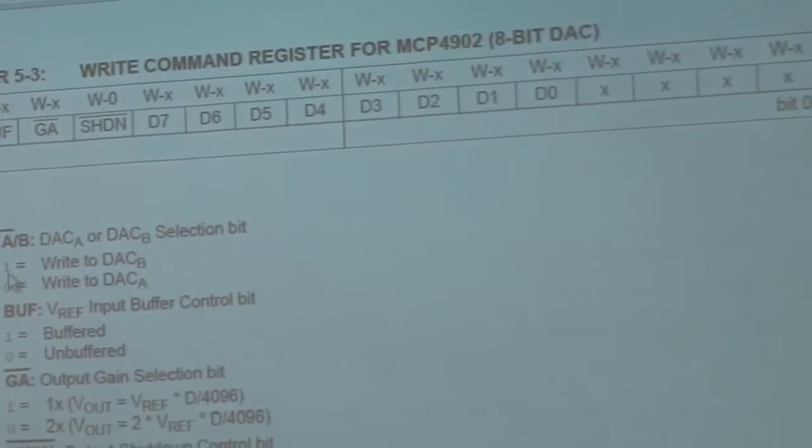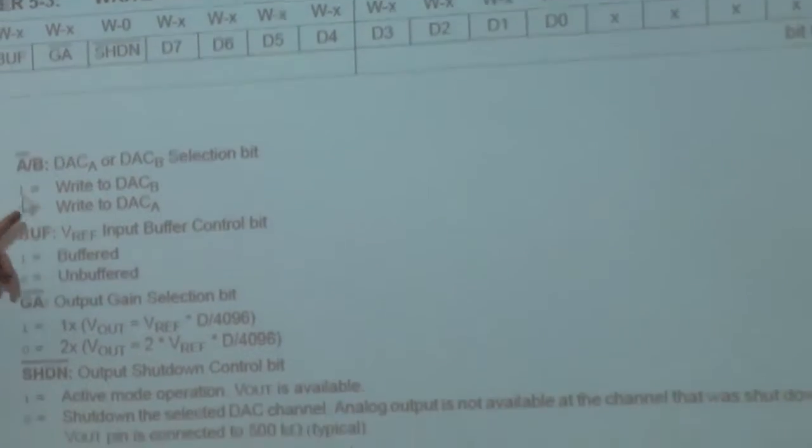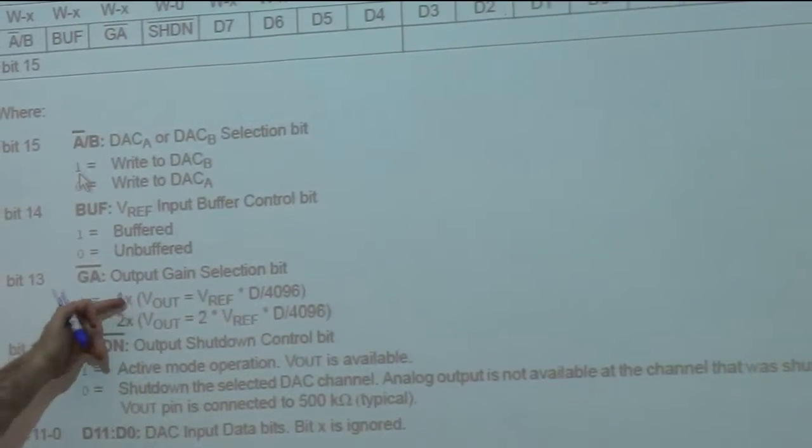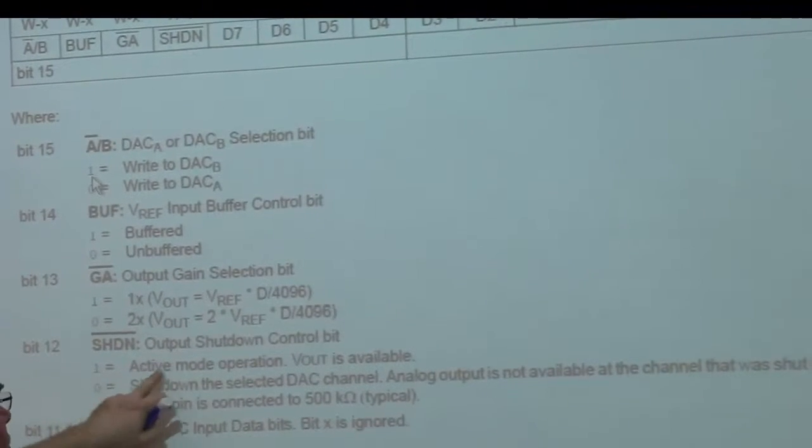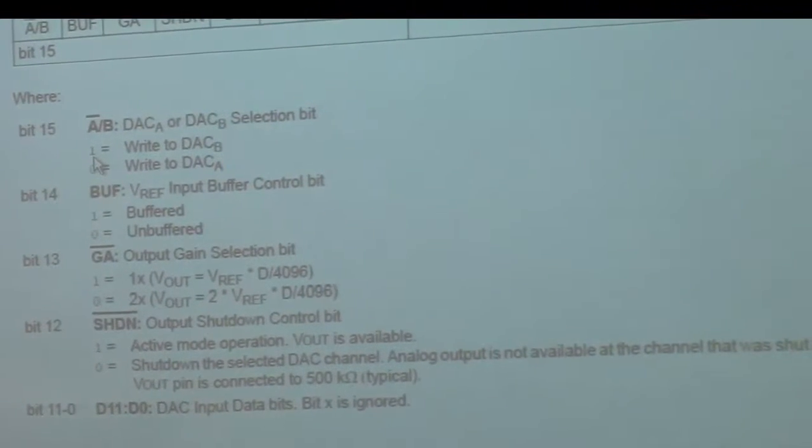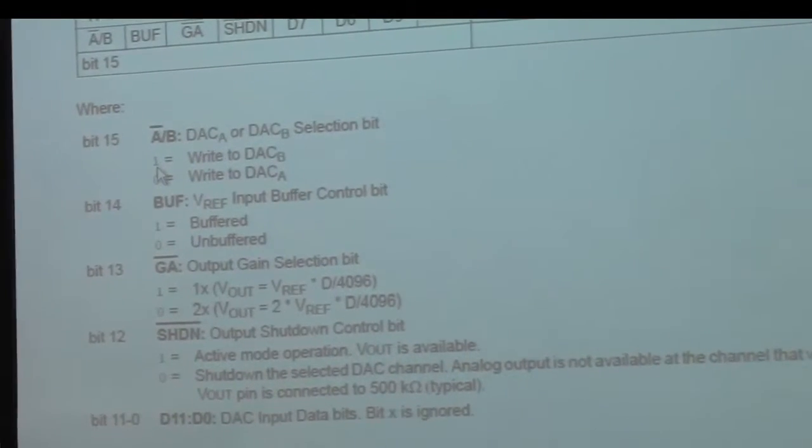So we're all 1s, right? So we're right into DAC B. We have the buffered reference. We have 1x on our gain output selection. And we're active. B out is available. The DAC is not shut down. Those are the first four 1s.